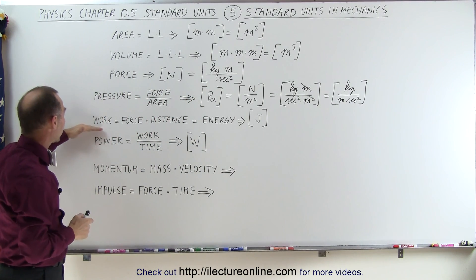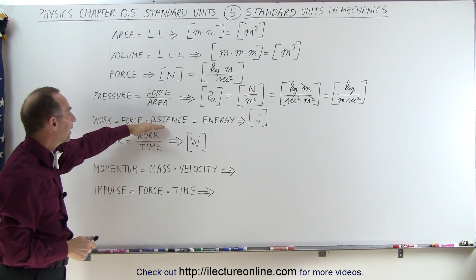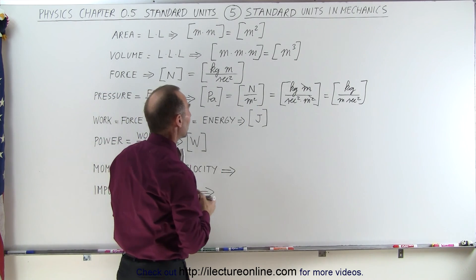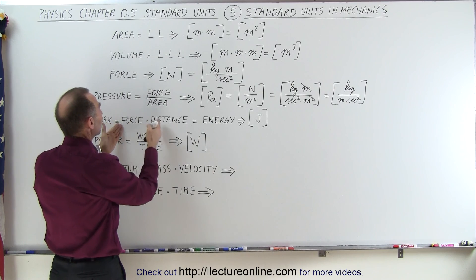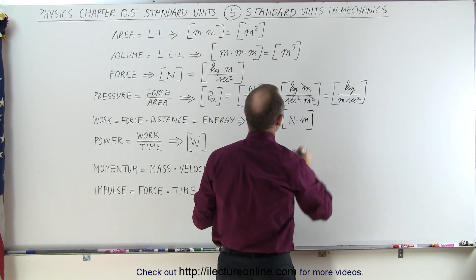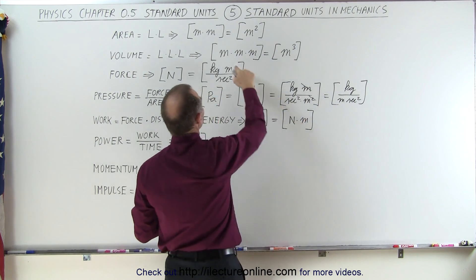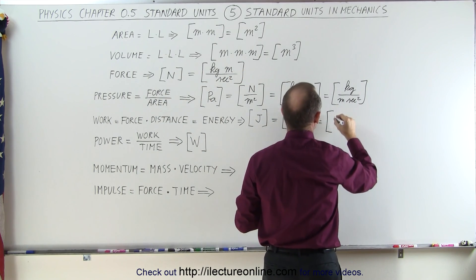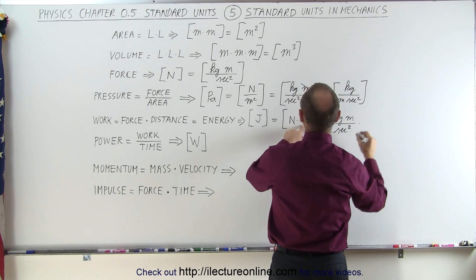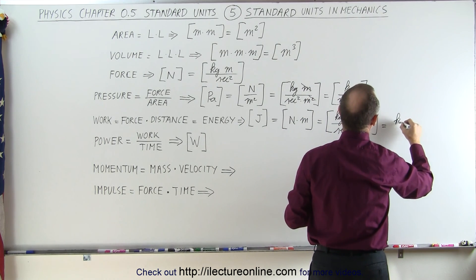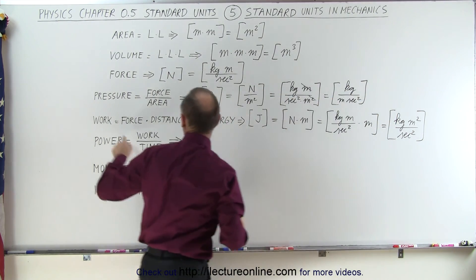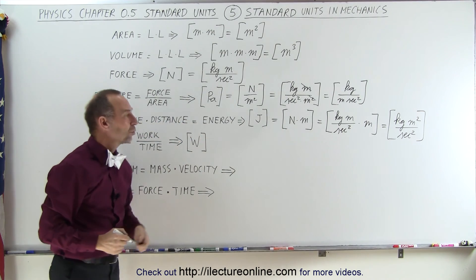Work is defined as force times distance and is also defined as energy — they share the same units: joules. Since work equals force times distance, the units are newtons times meters. Substituting newtons as kilograms times meters per second squared and multiplying by the additional meter gives kilograms times meters squared per second squared — the basic units of work, force times distance, and energy.